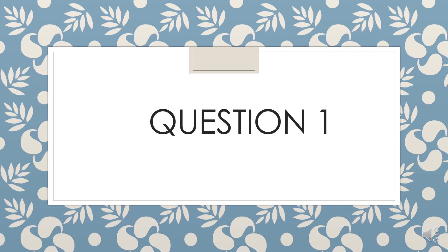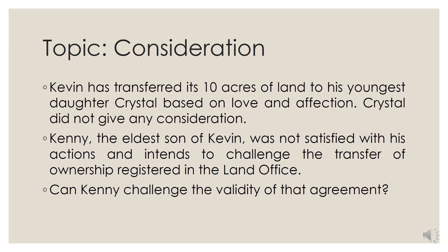I have prepared a few questions, but I will only discuss question number one in detail. You will have the chance to write an essay from the answers given for the other questions. The question is: Kevin has transferred his ten acres of land to his youngest daughter Crystal based on love and affection. Crystal did not give any consideration. Kenny, the eldest son of Kevin, was not satisfied and intends to challenge the transfer of ownership registered in the land office. Can Kenny challenge the validity of that agreement?